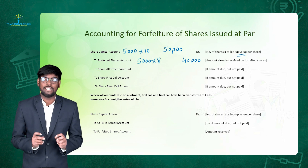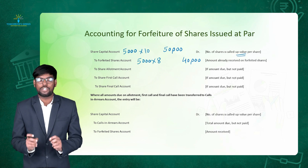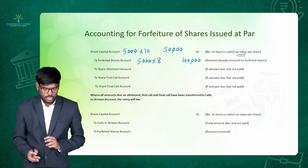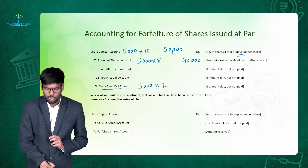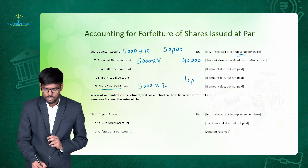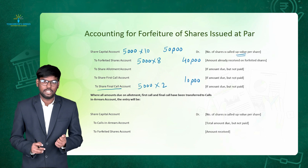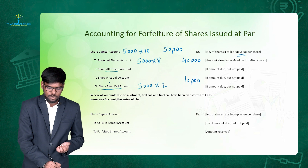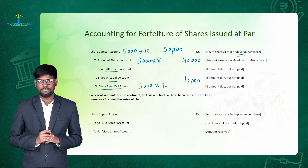Then we credit the money that we have not received. In this example, we were unable to receive the final call money of rupees 2, so we credit equity share final call account: 5000 shares multiplied by 2 equals rupees 10,000. Similarly, if you are unable to get allotment money or first call money, you credit those respective accounts — share allotment account and share first call account. This is the general entry for forfeiture of shares.